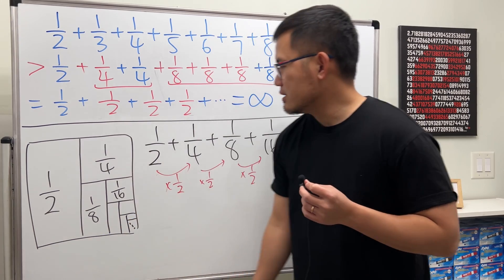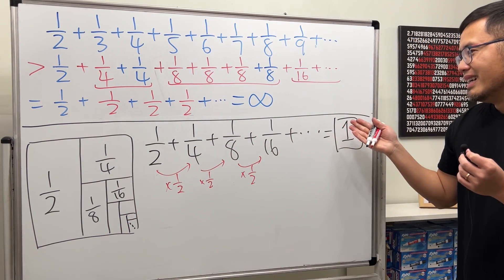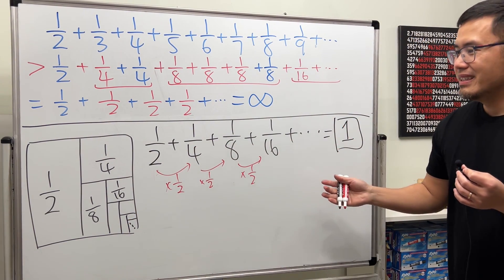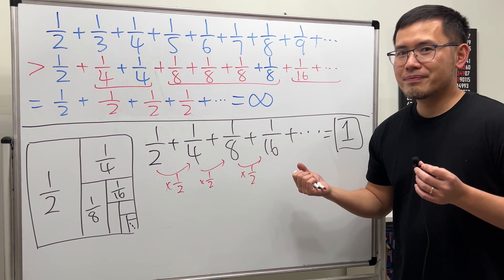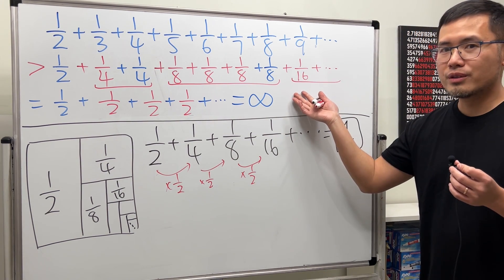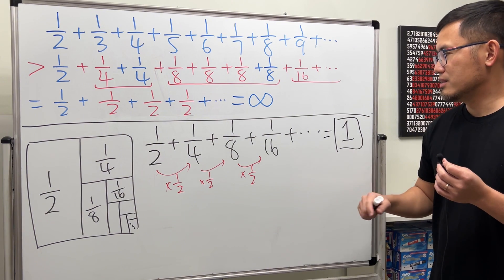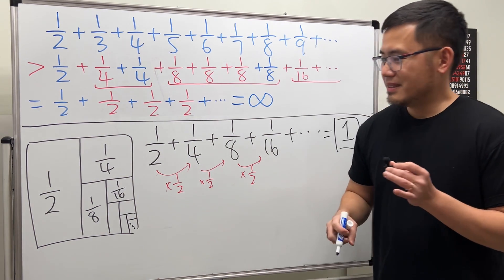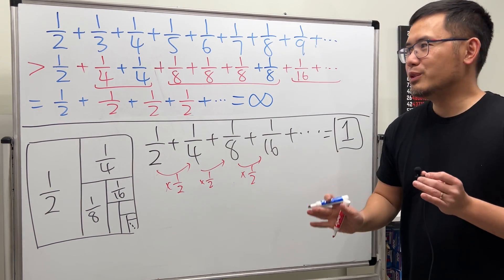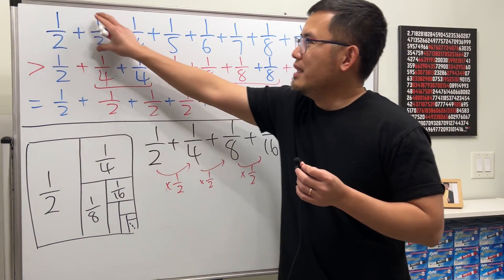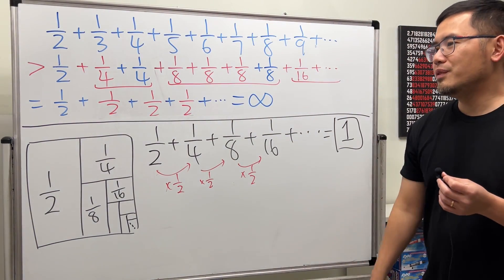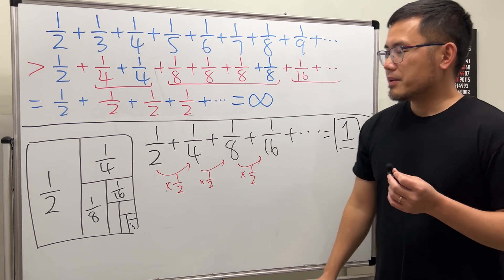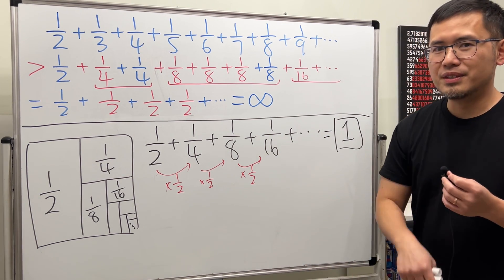So, as you can see, when we have infinitely many fractions and we're adding them up, we might not get infinity all the time. This right here is equal to 1. In fact, this is really, really crazy. I will give you guys the alternating version of that as well — in the next video.